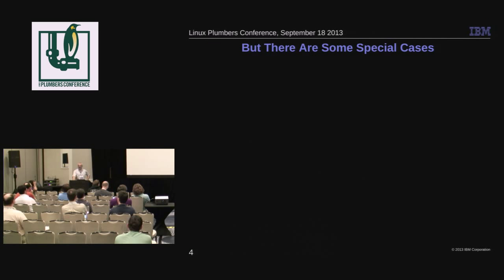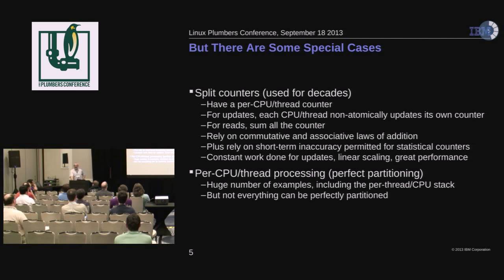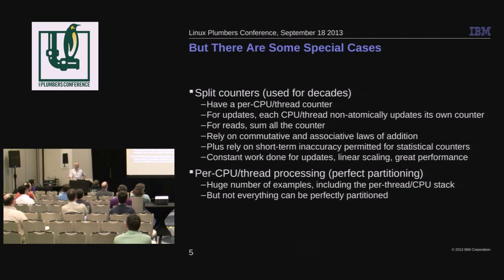It turns out there are some special cases where you can do updates and get really good scalability. What happens is we just have a counter for each thread or each CPU, depending on what context you're in. For updates, you non-atomically increment your own counter — you might need a memory access or something like that to keep the compiler from messing you up. And then when you read it, you have to sum all the counters, which is slow. But in a lot of cases, reads are very, very infrequent — you really update heavily.